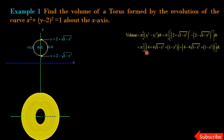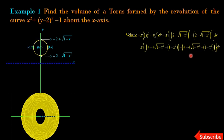Now squaring both terms: π times the integral from −1 to 1 of [4 + 4√(1 − x²) + (1 − x²)] − [4 − 4√(1 − x²) + (1 − x²)] dx. The +4 cancels with the −4, and the +(1 − x²) cancels with the −(1 − x²), leaving only two terms: 4√(1 − x²) + 4√(1 − x²) = 8√(1 − x²).